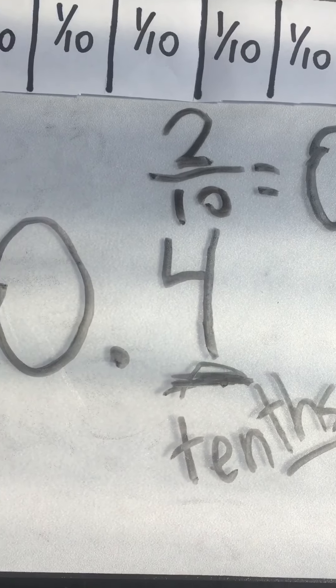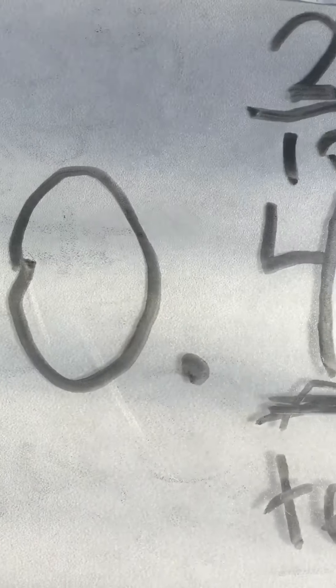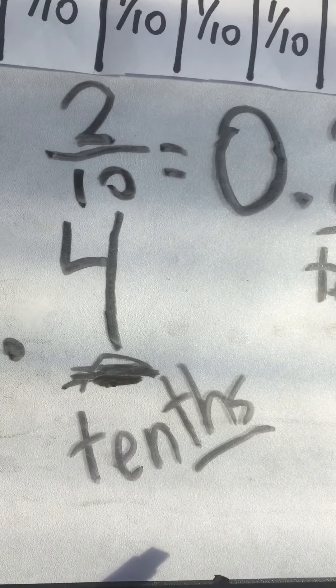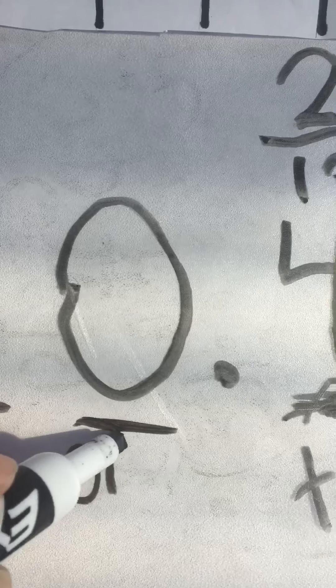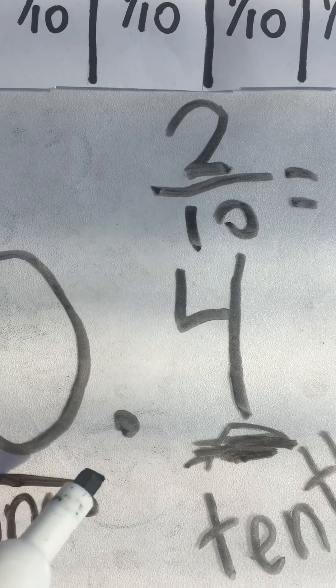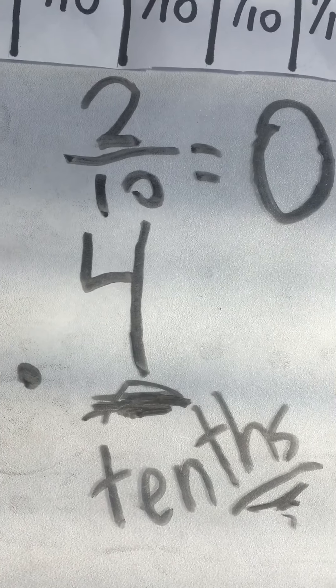If I have 4 tenths, I can change that into a fraction by writing 4 over 10. 10 is my place I'm looking at and I have 4 pieces of it. This place where my 4 is is called the tenths place — with the 'th'. Here is my ones, and that fancy decimal, and we're focusing on the tenths place.